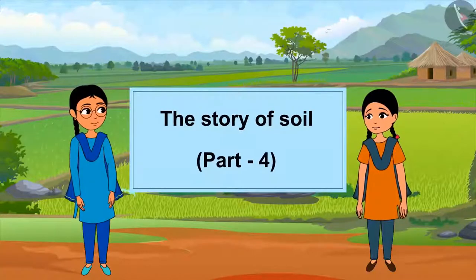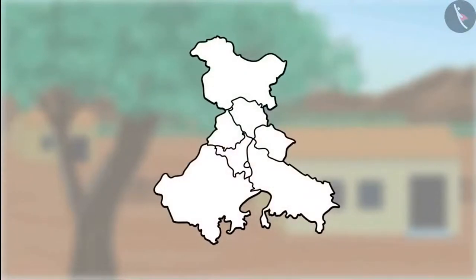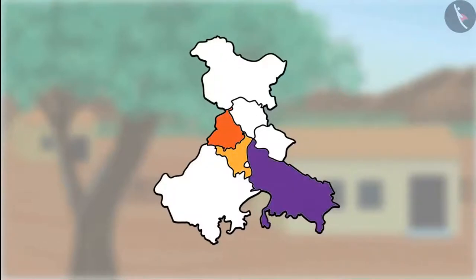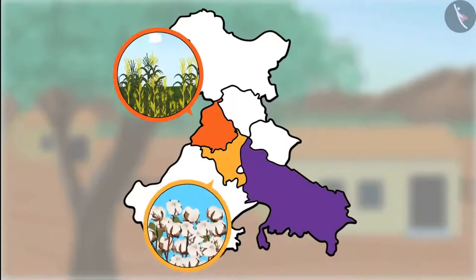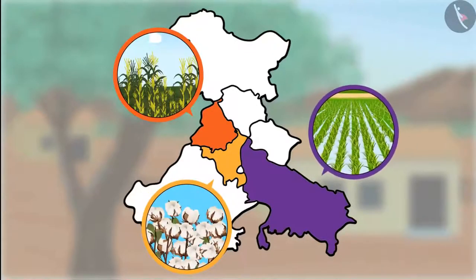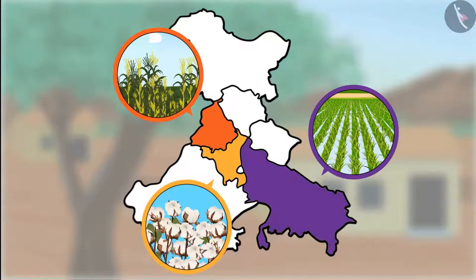The story of soil, part four. Hello children! I had gone on a journey by train and saw a few northern states of India — Punjab, Haryana, and Uttar Pradesh. The diversity in languages is similar to the different types of soil found in the region. The green fields of Punjab, the cotton fields of Haryana, and the rice fields of Uttar Pradesh were all wonderful. Why are different types of crops grown in different places? Is there any relationship with the soil of the region? Let us find out with Nilu and Minu.